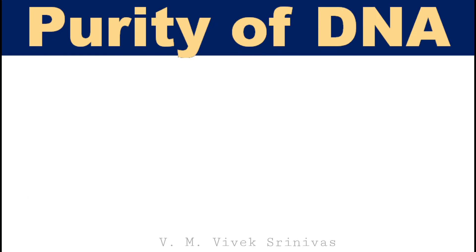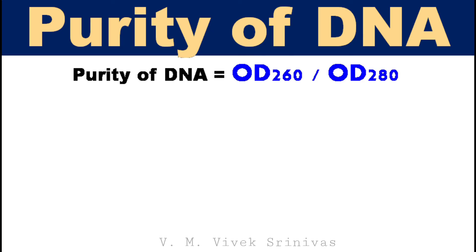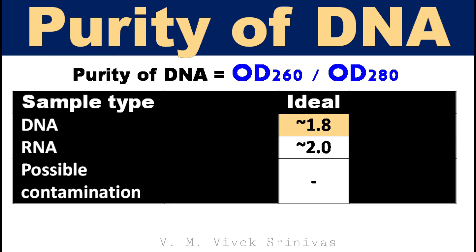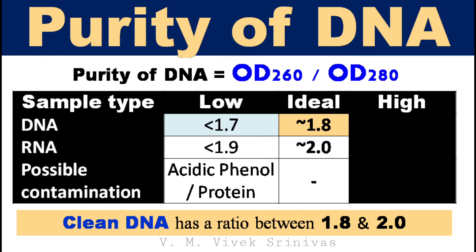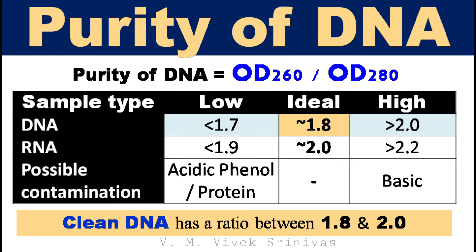The purity of nucleic acid can be determined by calculating the ratio of OD at 260 nm divided by OD at 280 nm for the DNA sample. If the ratio is between 1.8 to 2, it is accepted as pure or clean DNA. If the ratio is less than 1.8 or more than 2, it indicates the presence of protein contamination, phenol contamination, or other contaminants. In that case, the phase separation using the phenol-chloroform step or the washing step can be repeated with the sample.